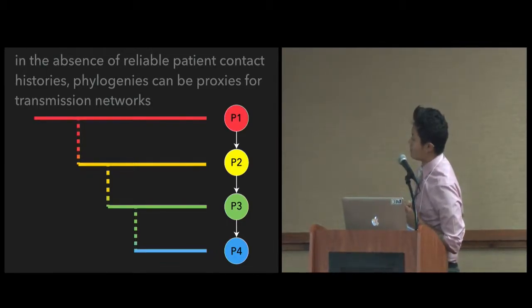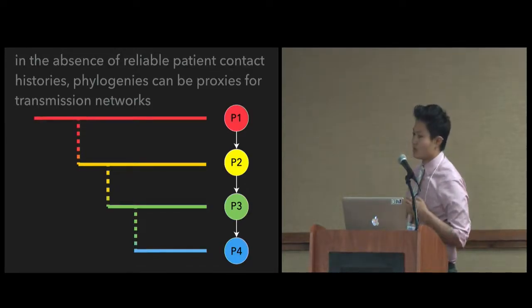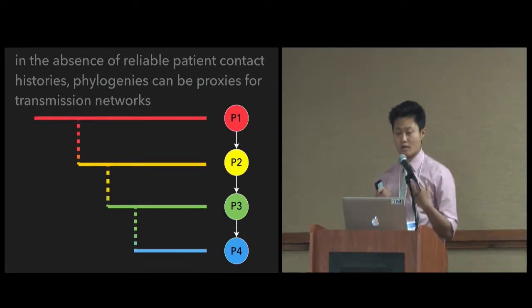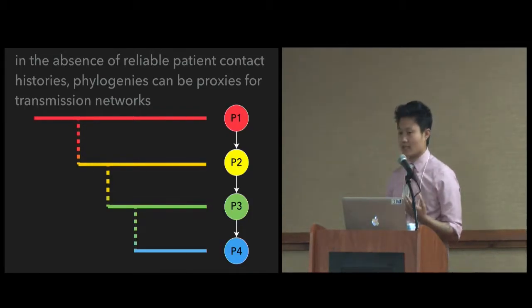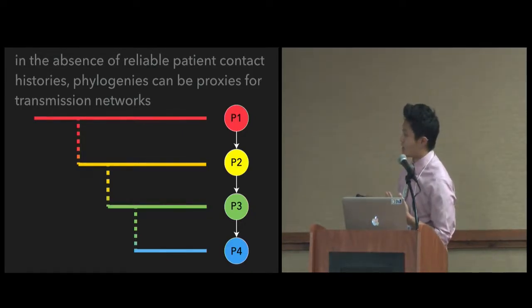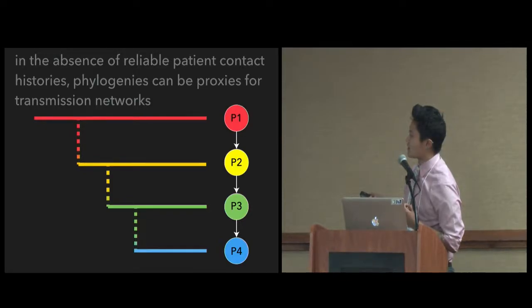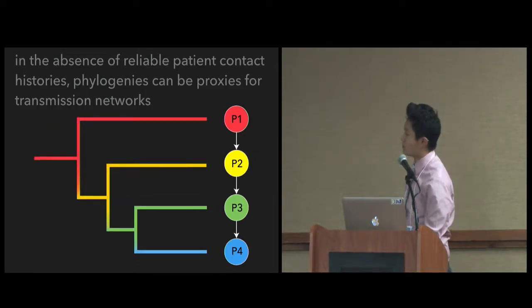On the right here, we have a simple transmission network. Person one infected person two, infected person three, infected person four. And so by sequencing the viral sequences within the individuals, you can isolate that from people's bloodstream. You can actually build a phylogeny of those viral sequences as they evolve. So on the left here then is the appropriate tree to represent the network on the right. This red sequence is patient one's viral population. And when there's a transmission event, it goes on to patient two and it becomes yellow and then green and blue. So this is the full tree. We can see that here, person three and person four, they share a most recent common ancestor. We can infer there was a transmission link between these two individuals.